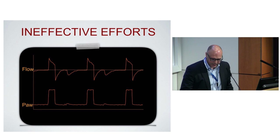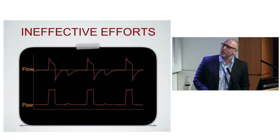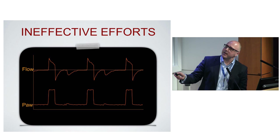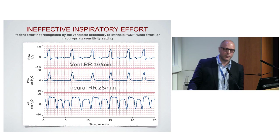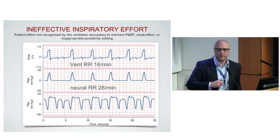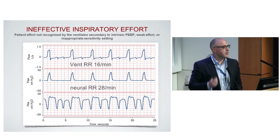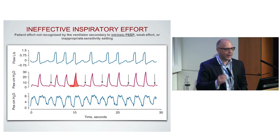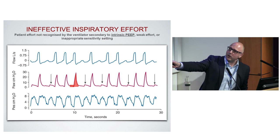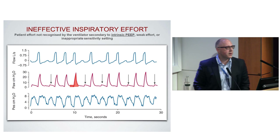Starting with triggering — looking at this waveform, you can see a reduction in flow: the flow changes, the pressure goes down, the flow goes up, but this does not completely go to zero. This is an ineffective trigger — the patient trying to breathe but unable to trigger a breath from the ventilator. Looking at the esophageal pressure, a balloon catheter in the middle of the esophagus — any negative deflection means the patient is trying to breathe. You can see the neural rate is 28, but the ventilator is only giving 16, because of those flow changes where flow goes up and pressure goes down — that's ineffective triggering.